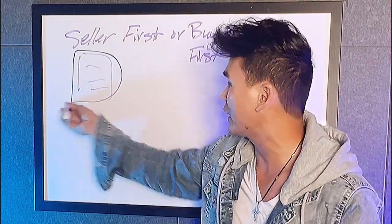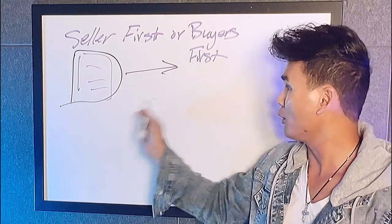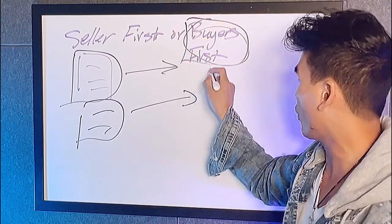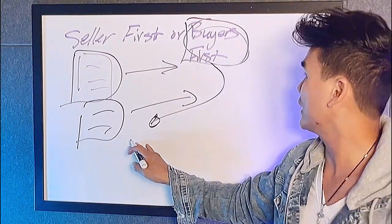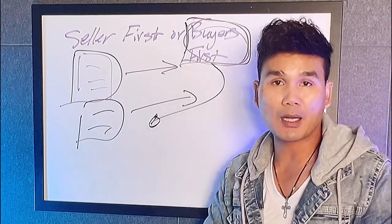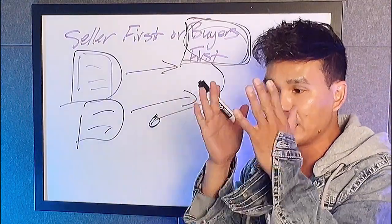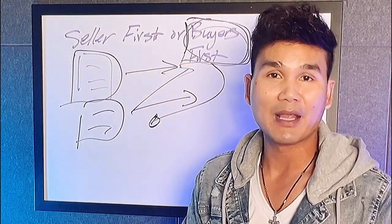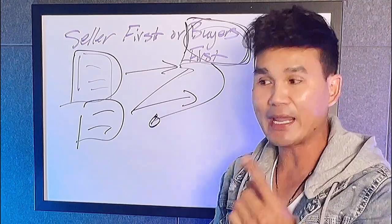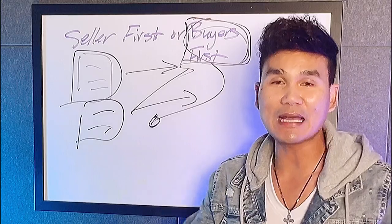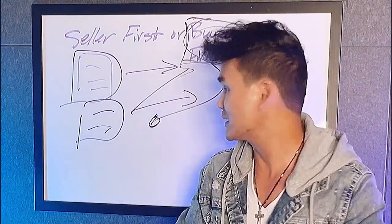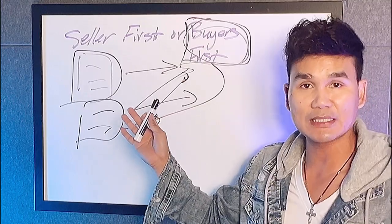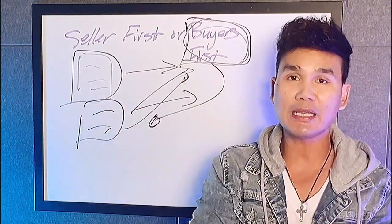Don't wait until you have a property under contract to find your buyer — you want to do both at the same time. So when you do have a property under contract, you already have a buyer in place. Some people ask about finding the buyer first and working backward, but the problem is you end up depending on just one buyer in one specific area. That limits your pool of buyers. Instead, focus on finding deals and building your cash buyer list simultaneously. When you have the deal, blast it out to your buyers — take it or leave it.